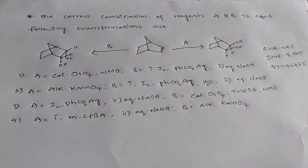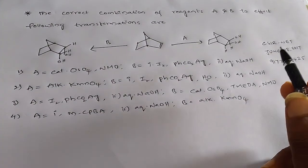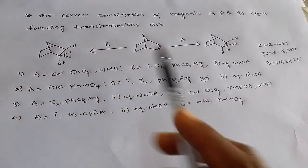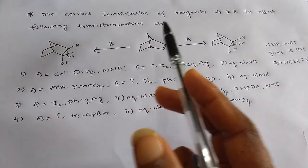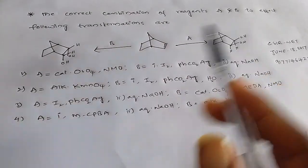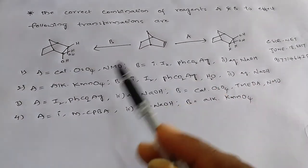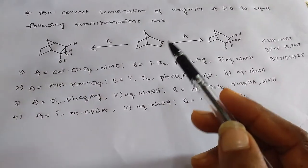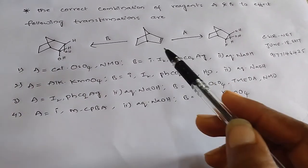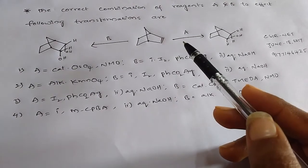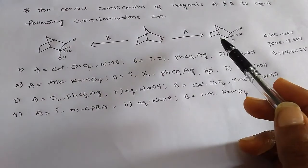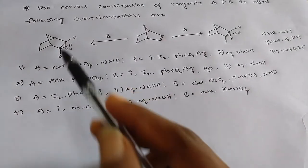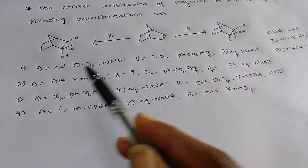Hi, this is your game master. This question appeared in CSIR NET June 2017. The question is: the correct combination of reagents A and B to affect the following transformations. We have from this bridged cyclic compound, on A it gives this compound, on B it gives this one.